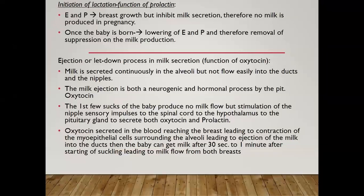The ejection or let-down process in milk secretion is due to endogenous oxytocin. Milk is secreted continuously into the alveoli but does not flow easily into the ducts; it is kept in the alveolar system. With suckling, there is neurogenic stimulation causing myoepithelial contraction of the ductal system in the nipples, ejecting milk into the baby's mouth. Oxytocin is secreted into the blood, reaches the breast, and causes contraction of myoepithelial cells surrounding the alveolar and ductal system, causing milk ejection. The baby can get milk 30 seconds to 1 minute after suckling.